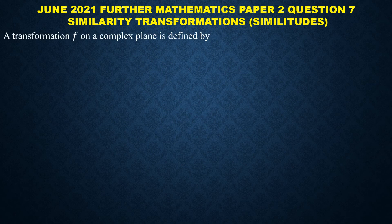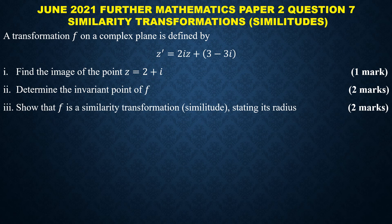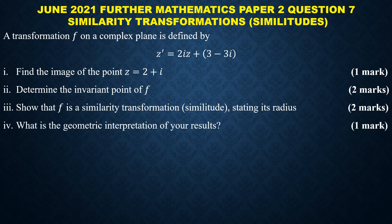The question reads: a transformation f on a complex plane is defined by z' = 2iz + 3 - 3i. Part (i): find the image of the point z = 2 + i, one mark. Part (ii): determine the invariant points of f, two marks. Part (iii): show that f is a similarity transformation, that is a similitude, stating its radius, two marks. Part (iv): what is the geometric interpretation of your results, one mark.